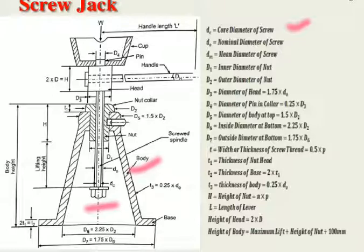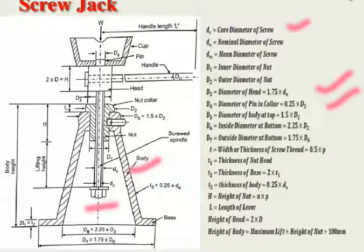dm is the mean diameter of the screw. d1 is the inner diameter of the nut; d2 is the outer diameter of the nut. d3 is the diameter of the head, calculated by 1.75 × d₀. d4 is the diameter of the pin, calculated by 0.25 × d3. d5 is the diameter of the body at top, calculated by 1.5 × d2.